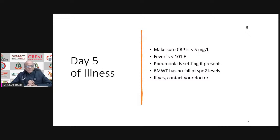Never ignore day five of COVID illness. The concept of day five is: when there is inflammation in your body, CRP — which is a marker of inflammation — will rise within 4 hours inside your body, peak between 36 to 48 hours, and then collapse by day four. By day four of any injury or inflammation, the C-reactive protein should crash and settle down.